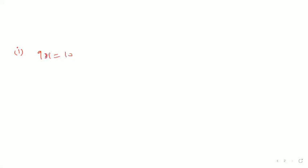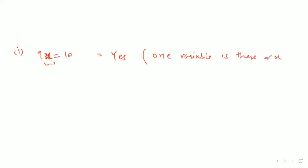Question Number 1: which of the following are linear equations in one variable? First part: 9x = 10. Only one variable is given, that is x, and the highest power is one — no other power is given. So the answer is yes, it is a linear equation in one variable, because there is only one variable, that is x, and the highest power is one.